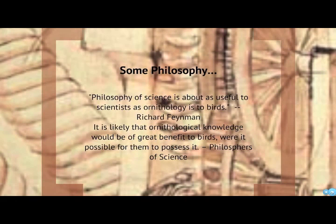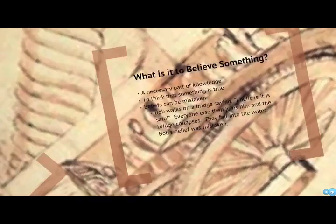Philosophically, it's difficult for scientists to really get a good handle on the philosophy of science. Richard Feynman famously said that the philosophy of science is about as useful to scientists as ornithology is to birds. Ornithology is the study of birds. It's likely that ornithological knowledge would be of great benefit to birds — knowing how they're classified and so forth. In other words, the philosophy of science would be great for scientists, were it possible for scientists to actually possess that philosophy. Well, we try, but we don't always succeed.